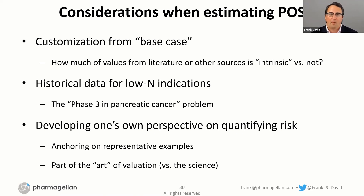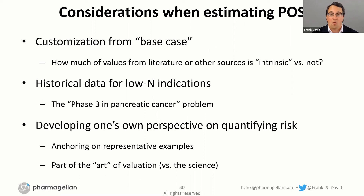How does it compare to something I gave 50% odds to? And to continue to refine how I'm thinking about those, to at least try to ensure some internal consistency. I think we're all going to have different views about how much weight we assign to different components of clinical probability of success, but within your own framework, one can strive to be somewhat consistent.